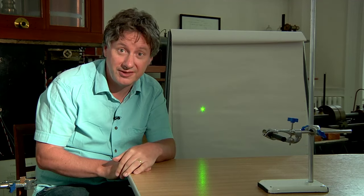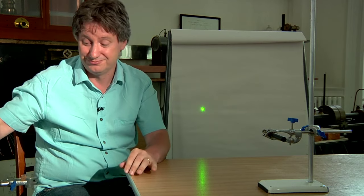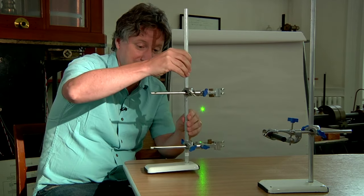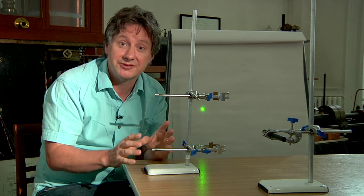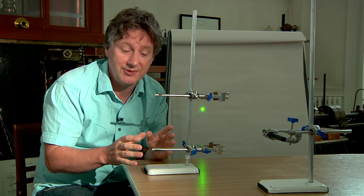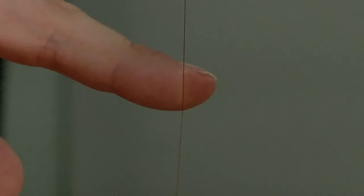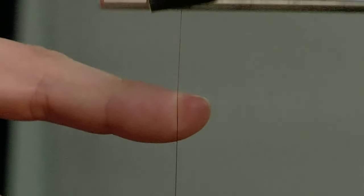Now, the third part of the experiment is simply a thin piece of wire. This wire is about a hundred microns in diameter. If I slide my finger up the wire, you should be able to see it quite clearly.